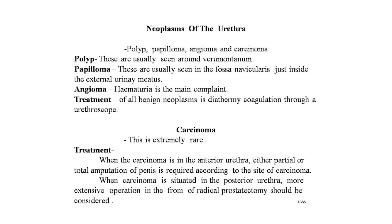Papillomas are usually seen in the fossa navicularis, just inside the external urinary meatus. Multiple papillomas of the posterior urethra have been detected and are usually associated with papilloma of the bladder. Angioma: hematuria is the main complaint, which is often profuse and may occur independent of micturition.